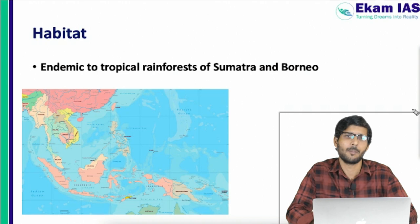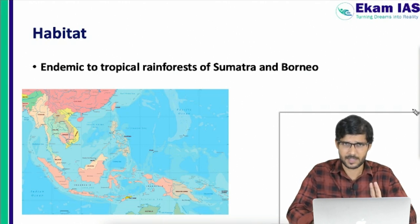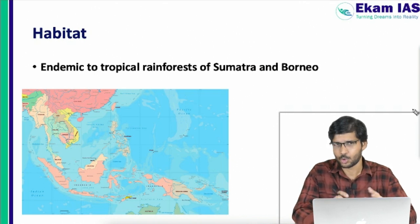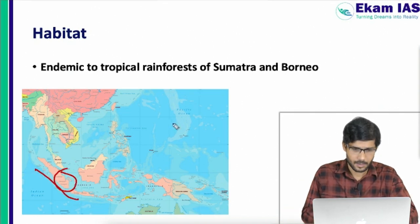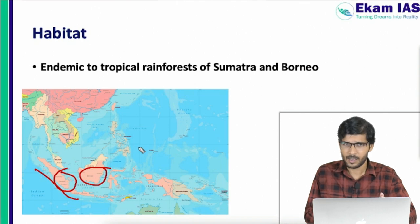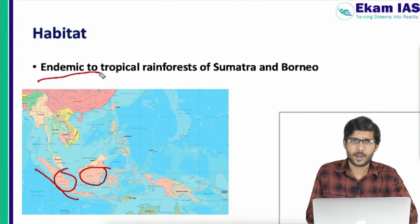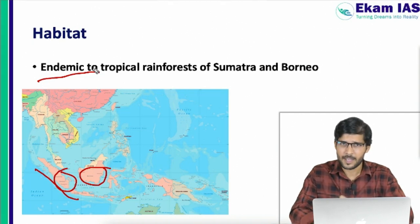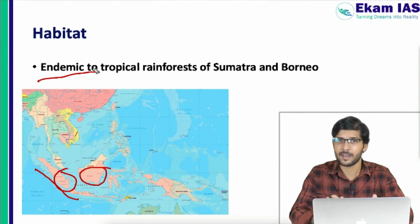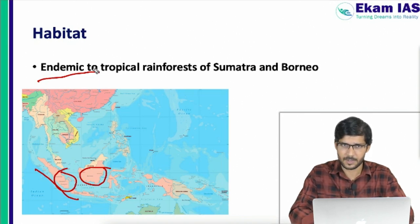Orangutans are endemic to two places: Sumatra and Borneo. Sumatra is an island of Indonesia, and Borneo is an island shared by three countries — Malaysia, Brunei, and Indonesia. Orangutans are native to these two islands and are not found in their natural habitat anywhere else on Earth, though they may be seen in zoos and zoological parks.